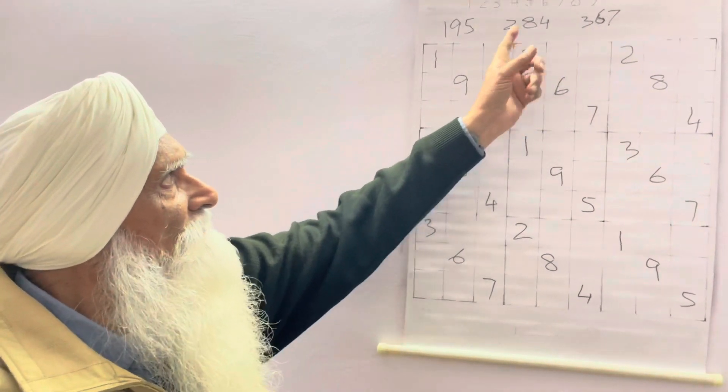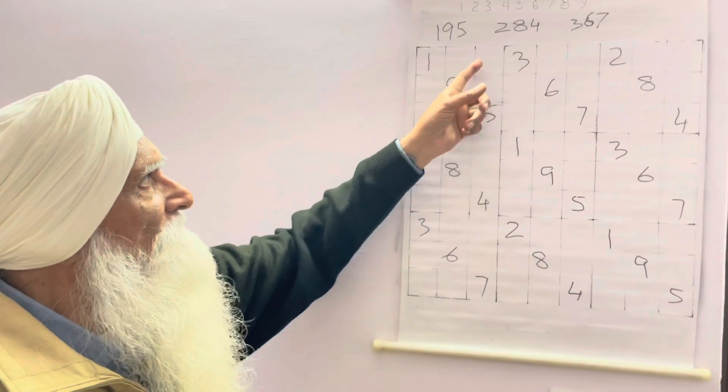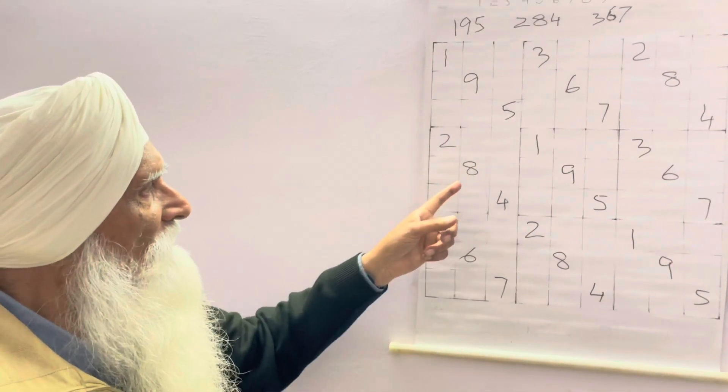These numbers: 3, 6, 7; 2, 8, 4; 3, 6, 7; 2, 8, 4, either of this, here and here, here and here, here and here.